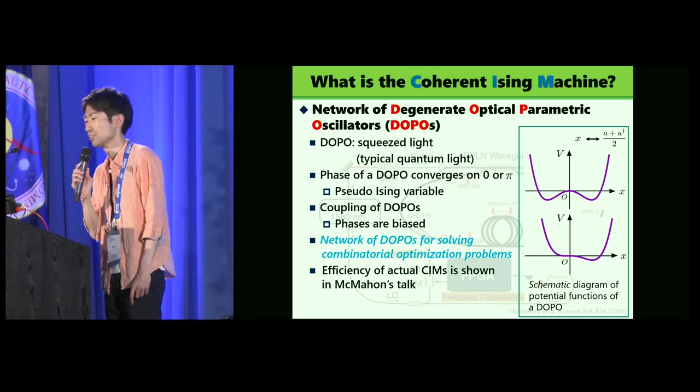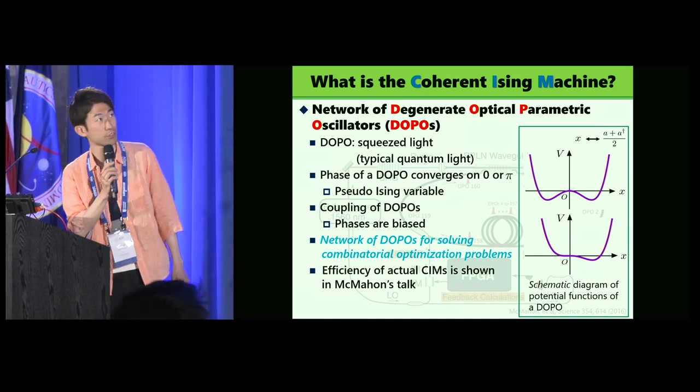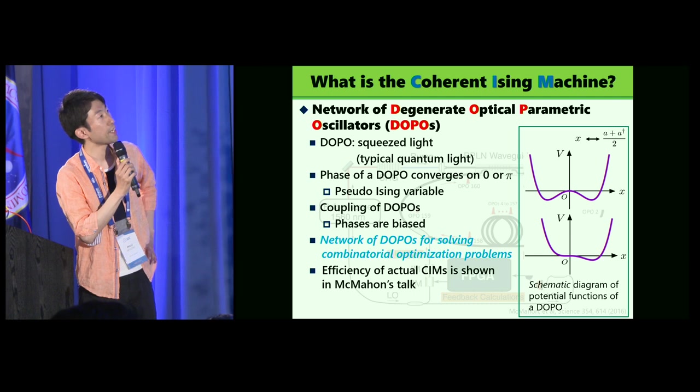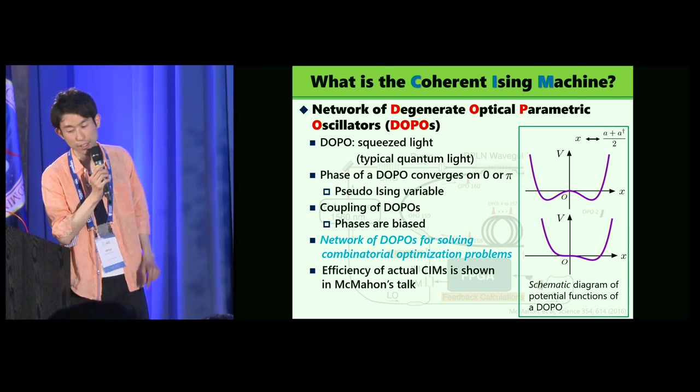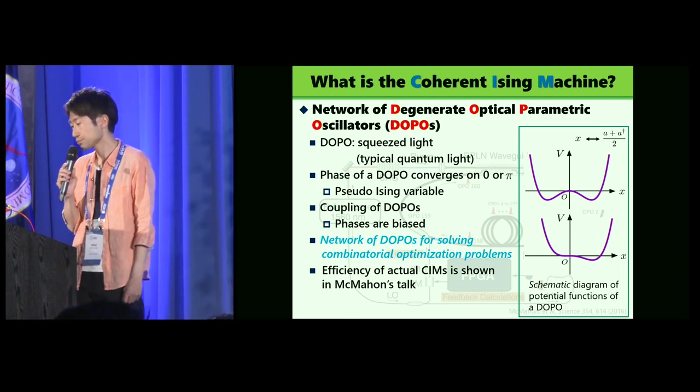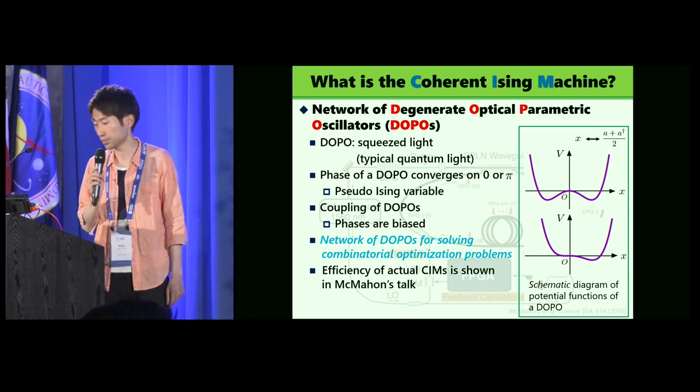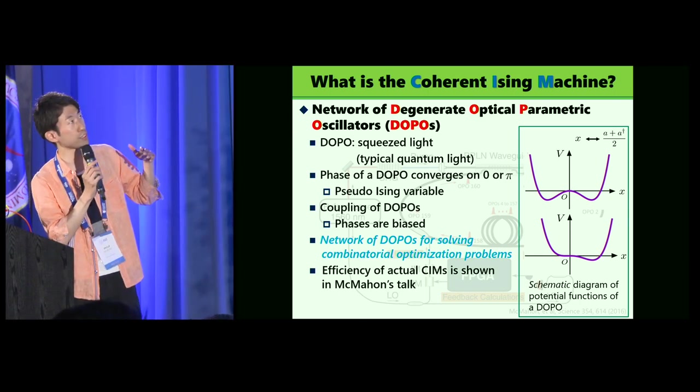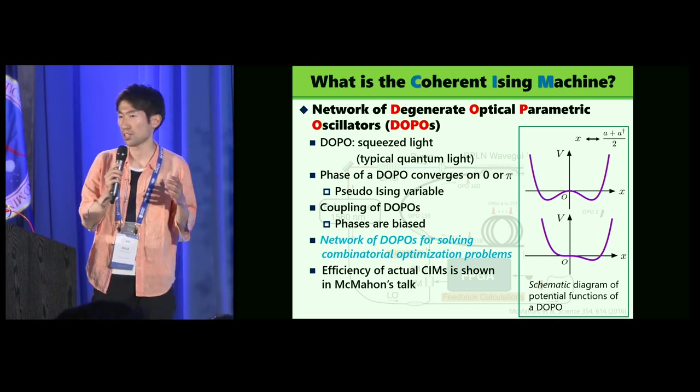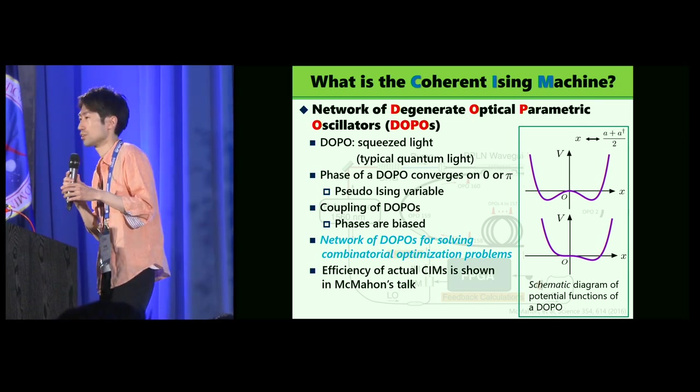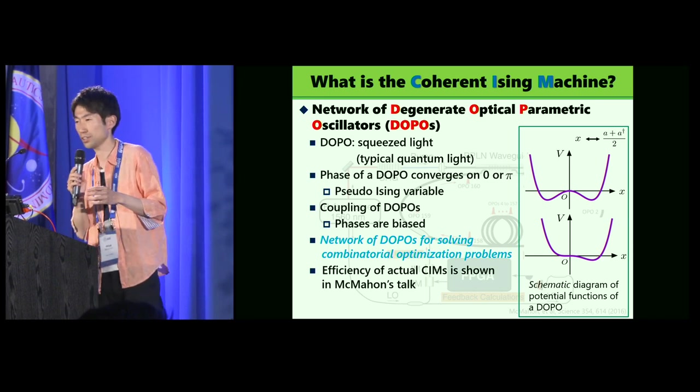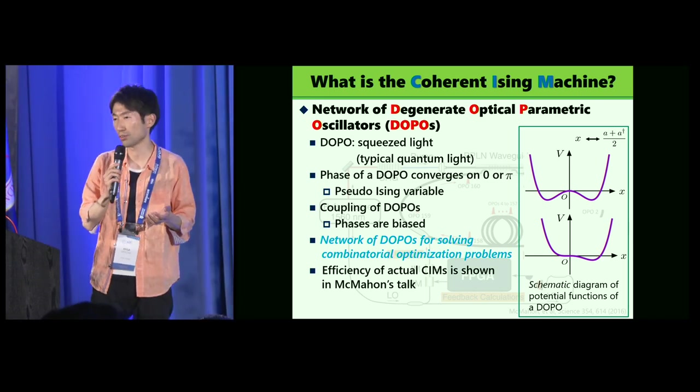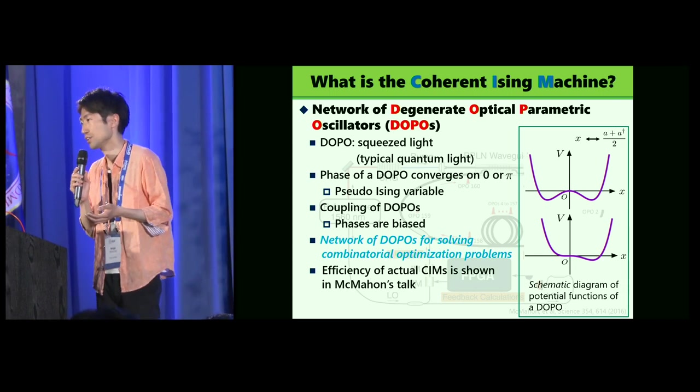The coupling of DOPOs realizes the bias of phases. Bias of phases are expected to be configuration of multiple DOPOs, expected to be the configuration of solutions for Ising spins and Ising Hamiltonian for target optimization program, and we did it in the network.